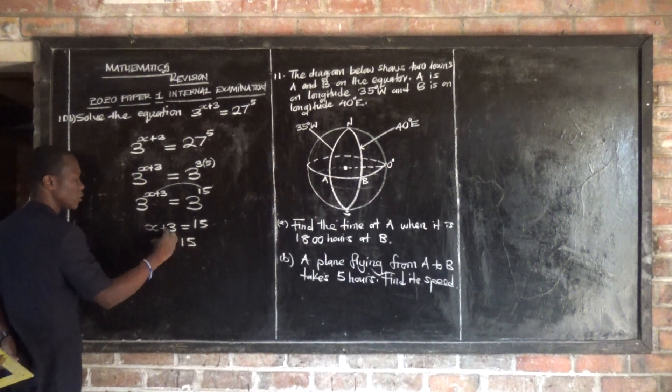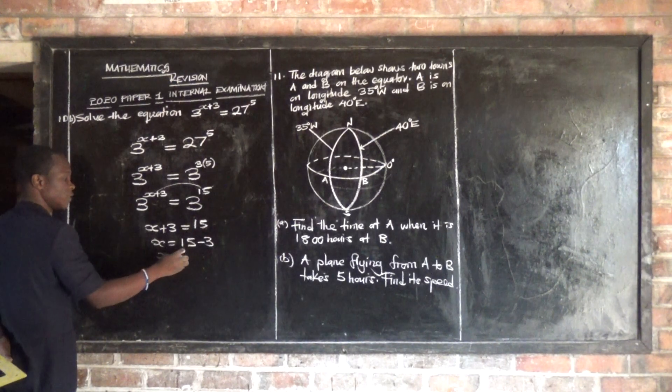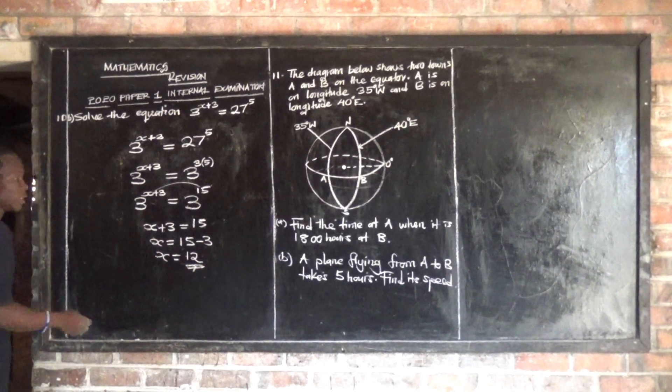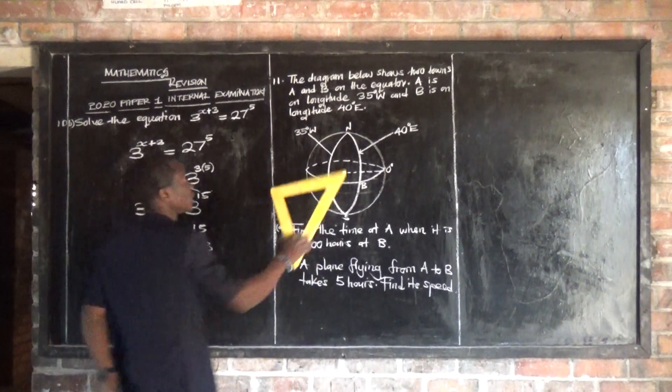Equate these powers. So finding the value of x is equal to 15, transpose, you're going to have minus 3. So x is equal to 15 minus 3, you get 12. So x is 12. Let's look at the equation on earth geometry, which was number 11.